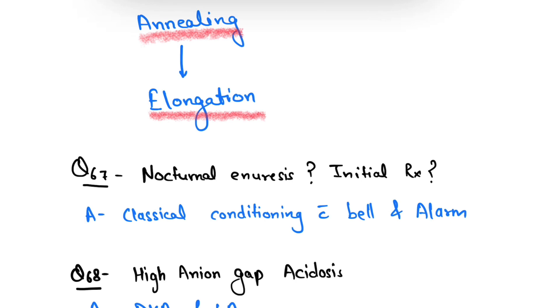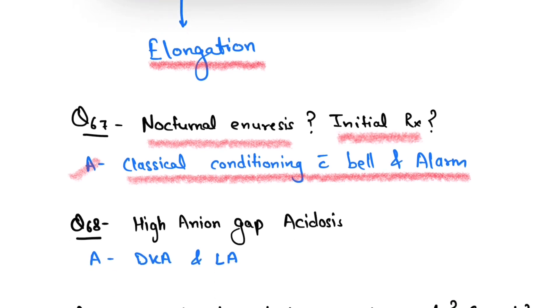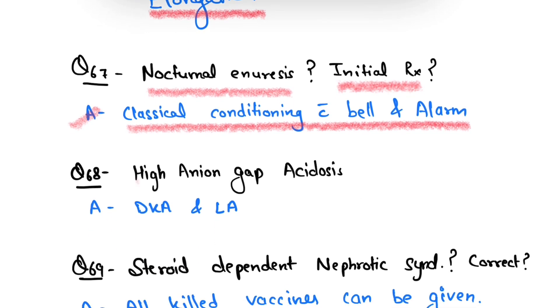History of nocturnal enuresis was given and they asked about the initial and most effective treatment. The initial treatment is classical conditioning with bell and alarm. Question number 68: high anion gap with acidosis. Answer was DKA and lactic acidosis.